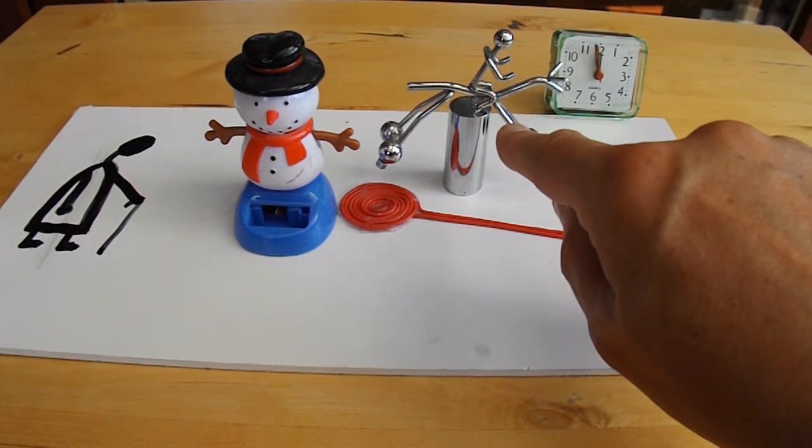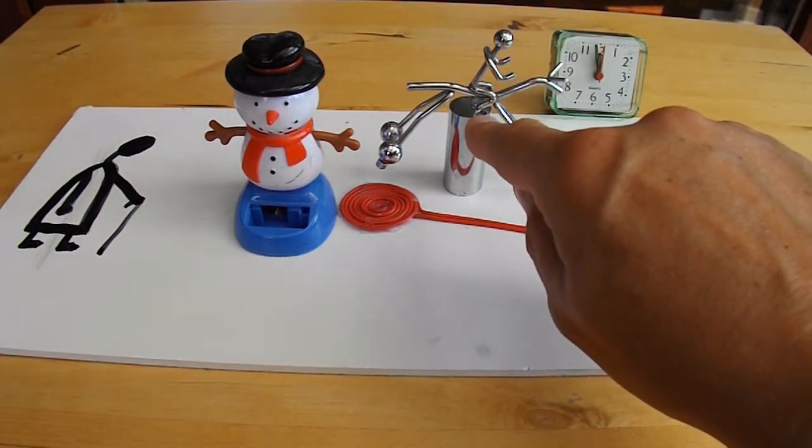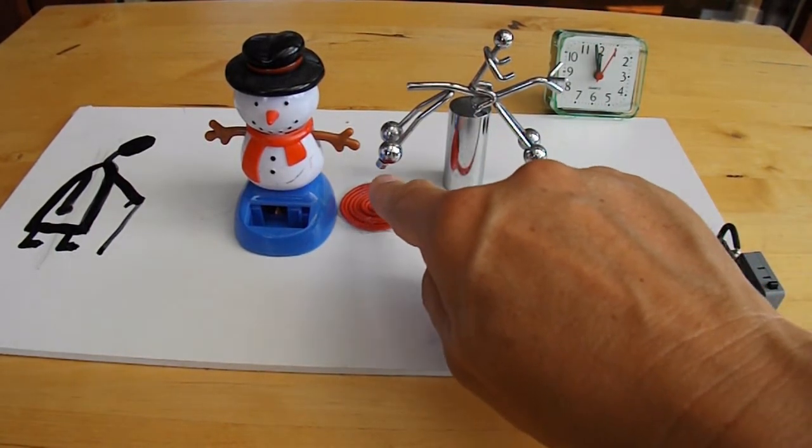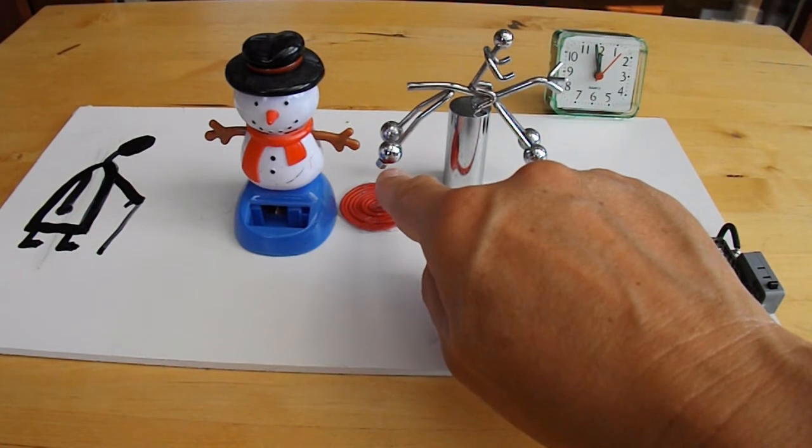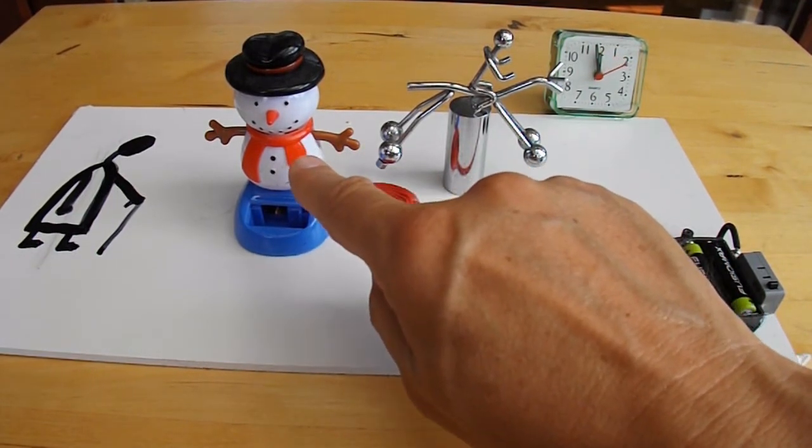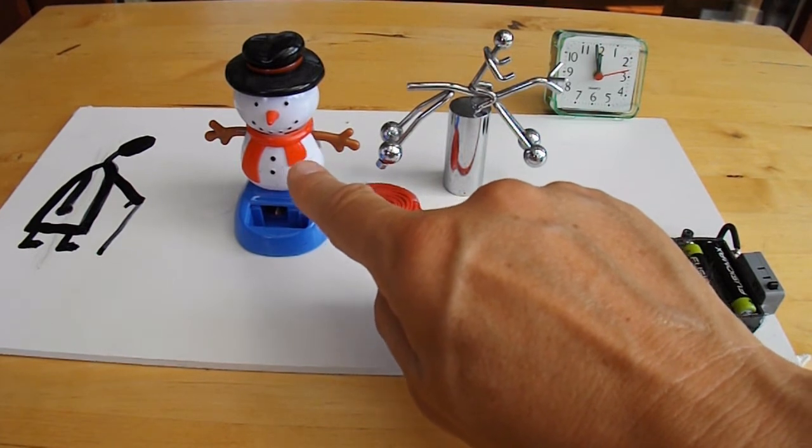That rocks particularly well. He's got little pointy feet, so he's got very little resistance to movement. And when that's moving, the motion of that magnet interacts with the magnet in my good old friend here, the solar snowman.